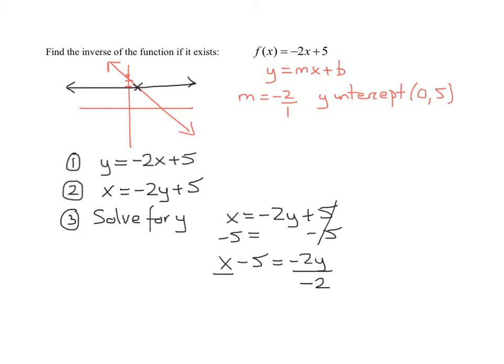And on the left-hand side, you might find it easier if you divide each of them by negative 2. So we're going to get y equals negative 1 half x, and I could have written that as negative x over 2 plus 5 halves. Because remember, a negative divided by a negative is a positive.